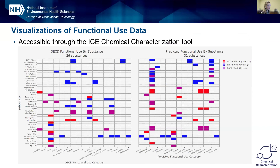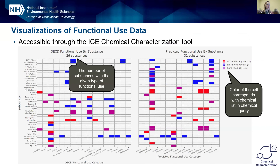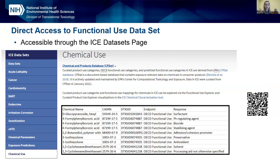If you want to access the functional use dataset, you can do so by visualizing it in the ICE chemical characterization tool. You can feed in chemical queries, and heat maps will show you the relative representation of OECD functional use and predicted functional use, indicating the number of substances that have a given type of use. If you want to compare the uses of two chemical lists, or just one, it's up to the user. You can also download these curated functional use categories from the ICE datasets page, covering both the OECD use and the predicted use.